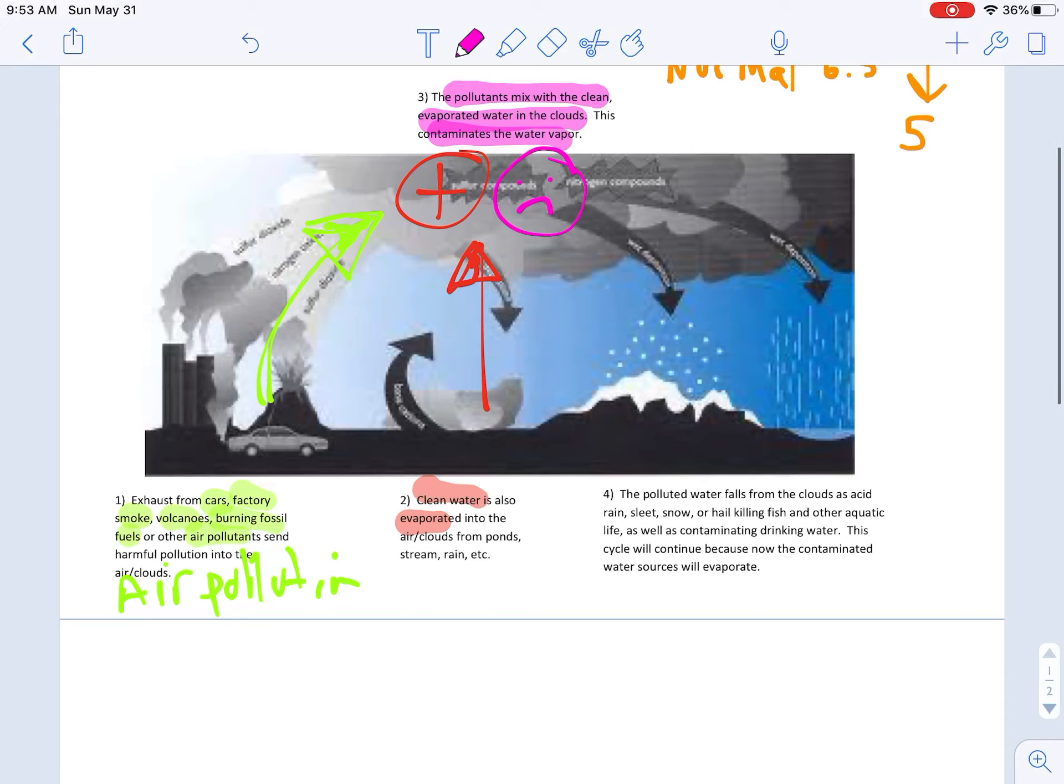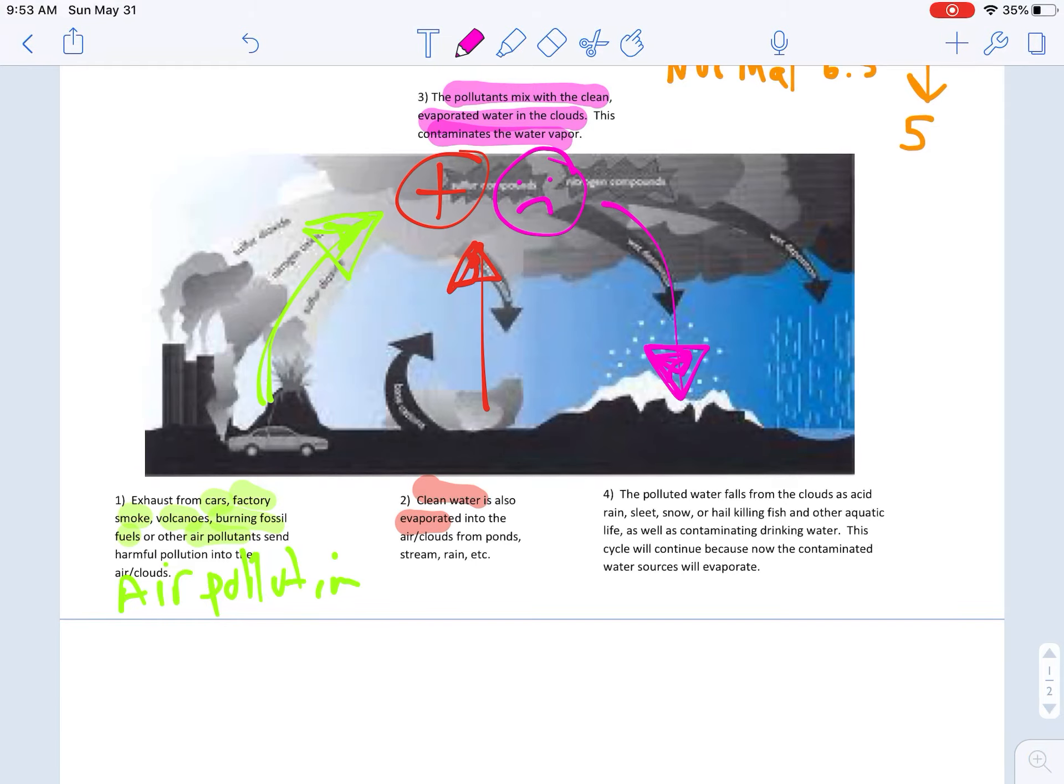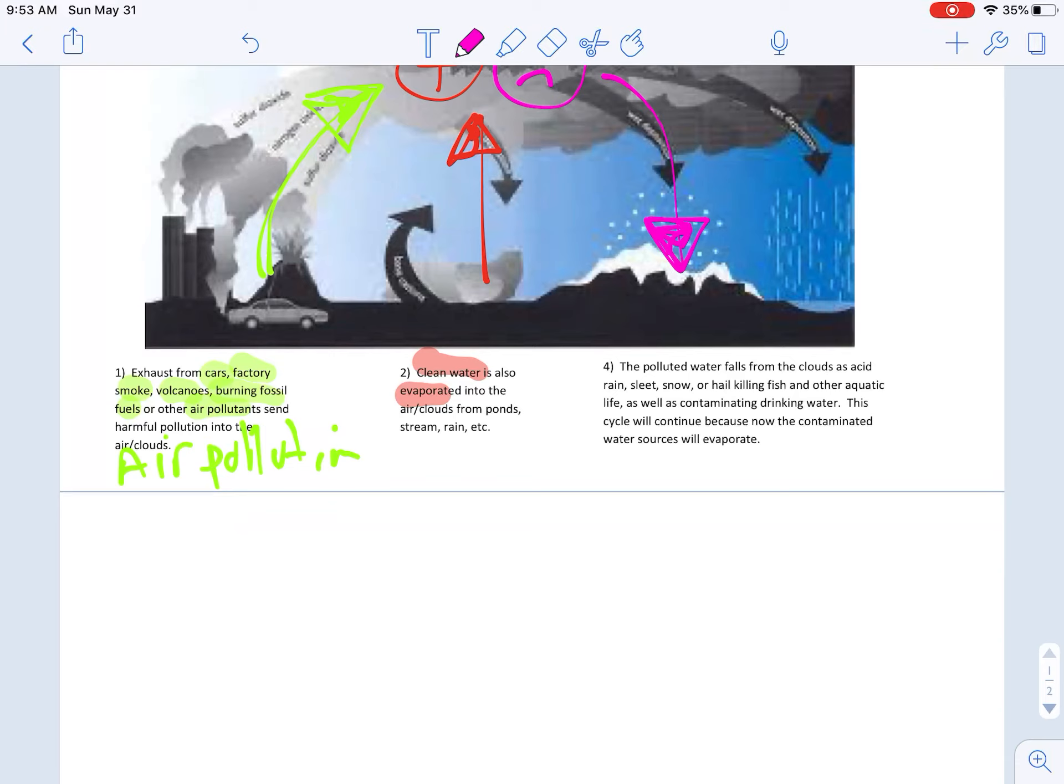And guess what? That water vapor is going to condense and come down in the form of rain, snow, sleet, or hail. But it's not just normal water or normal snow or normal sleet or normal hail. It is now contaminated hail, snow, sleet, or rain. As it says right here, the polluted water falls from the clouds as acid rain, snow, sleet, or hail.